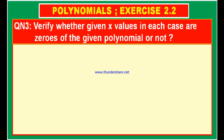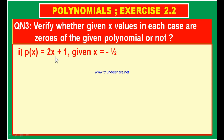Now, we may be given some 6 to 8 bits in question number 3 and we have to solve them. This is the first bit. P of x is equal to 2x plus 1 and given x is equal to minus 1 by 2. In this case, we have given a polynomial 2x plus 1, and the variable x is given with value minus 1 by 2. We have to check whether minus 1 by 2 is a zero of this polynomial or not. In order to check, we substitute x is equal to minus 1 by 2 and find the value of the polynomial. If we get 0, it is the zero of the polynomial; if not, it is not the zero of the polynomial.